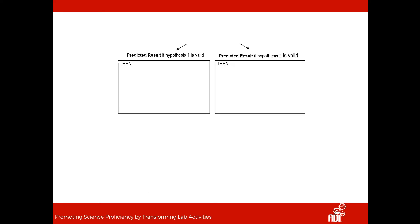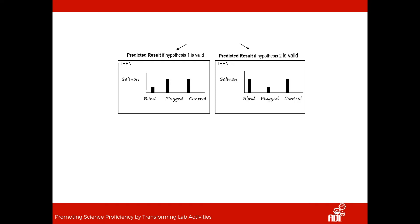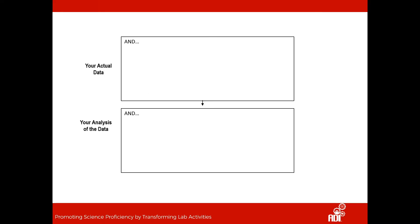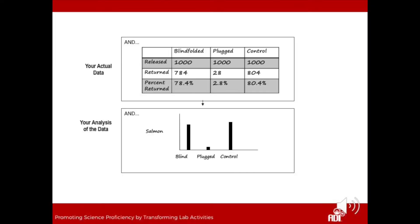If our first hypothesis — that salmon navigate by sight — is supported, we would expect to see that the blindfolded salmon have a really hard time finding their way back to their home stream to spawn. But if the navigate-by-scent hypothesis is supported, then our predicted result looks different: the salmon with plugged noses are going to have a much harder time getting back, because they don't have the ability to navigate using the sense that helps them find their way back. Then we ask students to go ahead and perform the test to get some data.